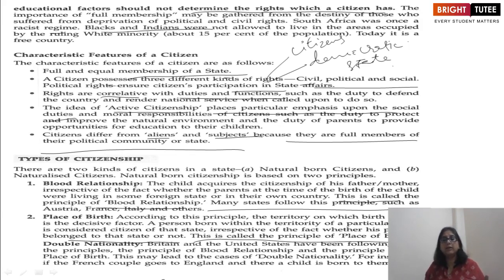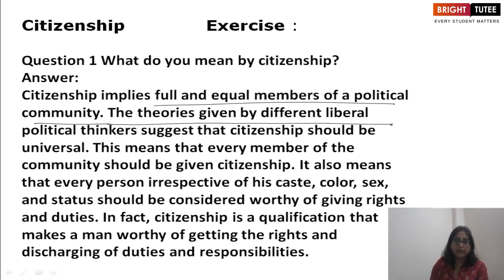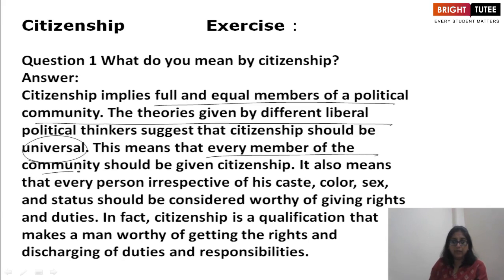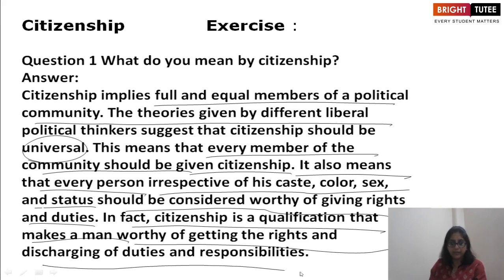Double nationality arises when both principles are followed. Britain and the United States have followed both the principle of blood relationship and the principle of place of birth. This may lead to cases of double nationality — for instance, if a French couple goes to England and a child is born there, the child would have both nationalities. Citizenship is a qualification that maximizes worthiness of getting rights and discharging duties and responsibilities.